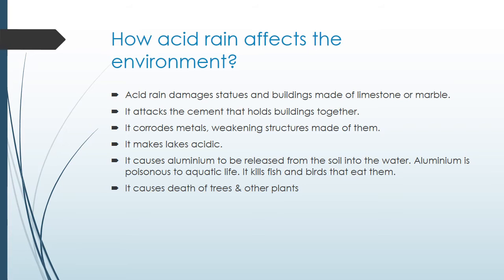The ecological effects of acid rain are most clearly seen in aquatic environments such as streams, lakes and marshes, where it can be harmful to fish and other wildlife. It makes lakes acidic as it flows through the soil. Acidic rainwater can leach aluminum from soil clay particles and then flow into streams and lakes. The more acid introduced to the ecosystem, the more aluminum is released. Aluminum is poisonous to aquatic life — it kills fish and birds that eat them.